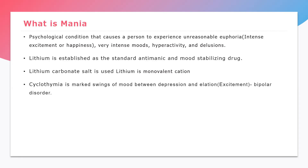Cyclothymia is defined as the marching of mood between depression and elation. Depression means absence of any activity and elation means hyperactivity or excitation. It is also called bipolar disorder — one pole of depression and another of excitement or elation.